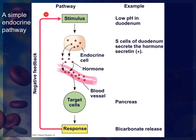The negative feedback mechanism does not only apply to hormone levels — it also applies to levels of any types of changes, such as pH and temperature. In this example, if there is a low pH in the duodenum — the first portion of the small intestine — the enzymes located there work at a neutral pH of around 7. A low pH would indicate that the duodenum is acidic, meaning the enzymes cannot work, so the stimulus is the detection of low pH.